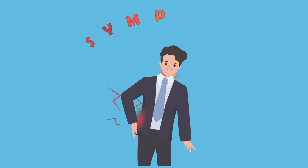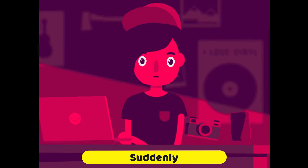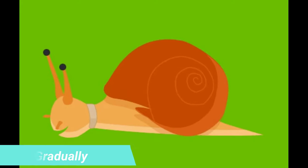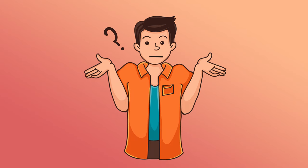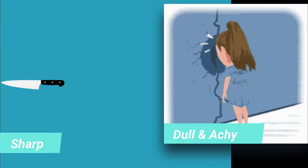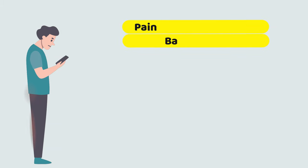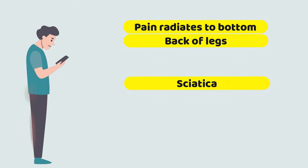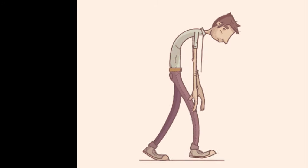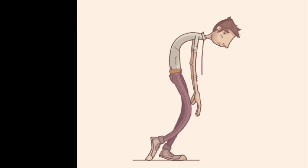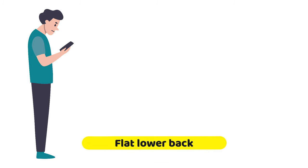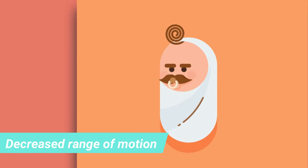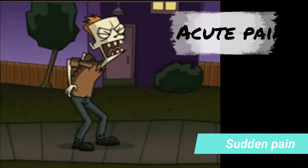Let's now discuss the symptoms of lower back pain. Symptoms can come on suddenly or they may appear gradually. Sometimes the pain occurs after a specific event such as bending to pick something up; other times you may not know what caused it. Pain may be sharp or dull and achy, and it may radiate to your bottom or down the back of your legs, especially in case of sciatica. The pain may make it hard to move or stand up straight. You may notice decreased range of motion. Pain that comes on suddenly is acute, whereas pain that lasts more than three months is considered chronic.